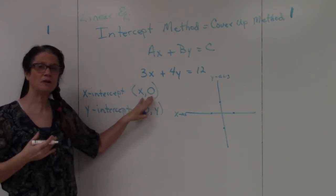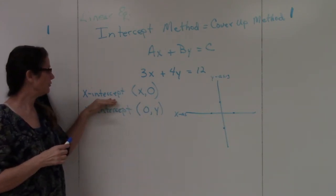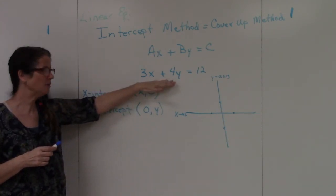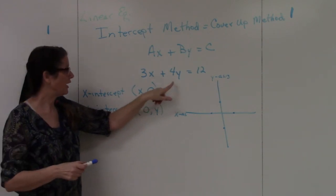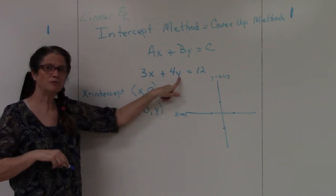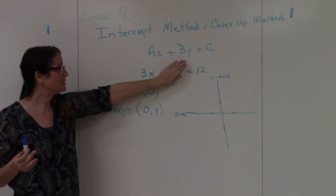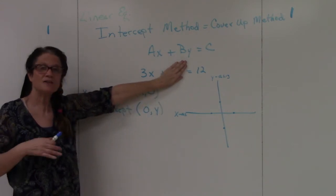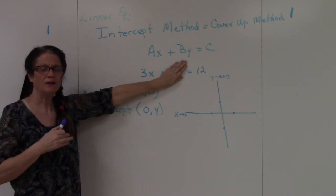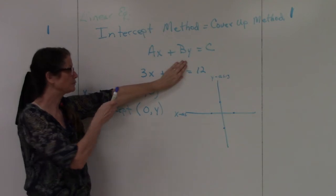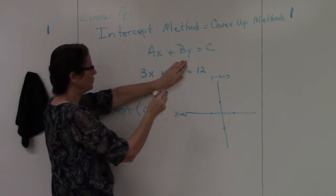That's what makes this so easy — we're dealing with zeros. Where the cover-up part comes in: if I'm looking for my x-intercept, I replace my y with zero. So I put zero in for y and get four times zero, which is zero — it all goes away, so I can cover up that entire y term. Once I cover the y term up, I end up with 3x equals 12.